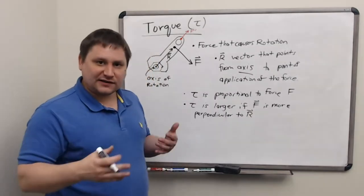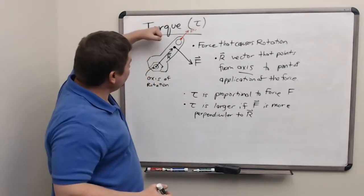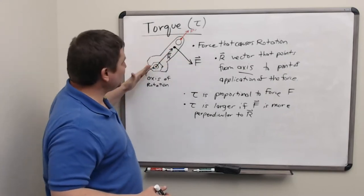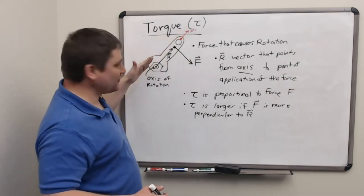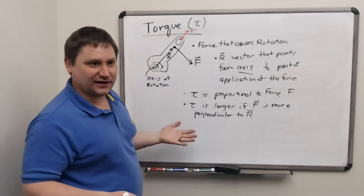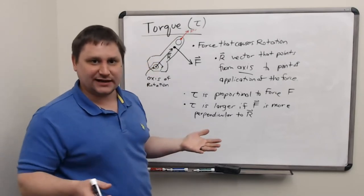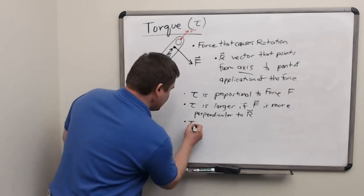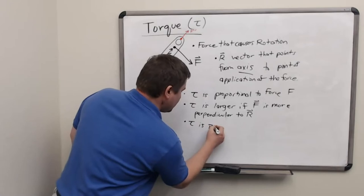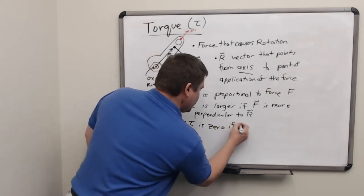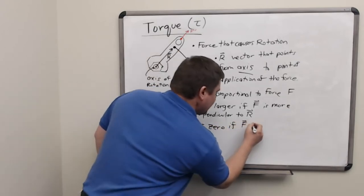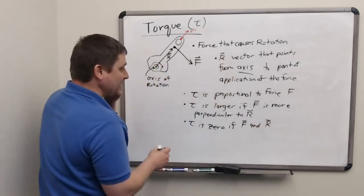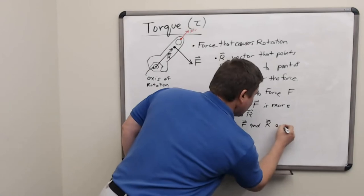So we get the best torque possible by pushing in a tangential direction. Pulling or pushing the wrench towards or away from the bolt is not going to tend to spin or rotate at all. So the torque would be zero if the force and this displacement vector R are parallel.